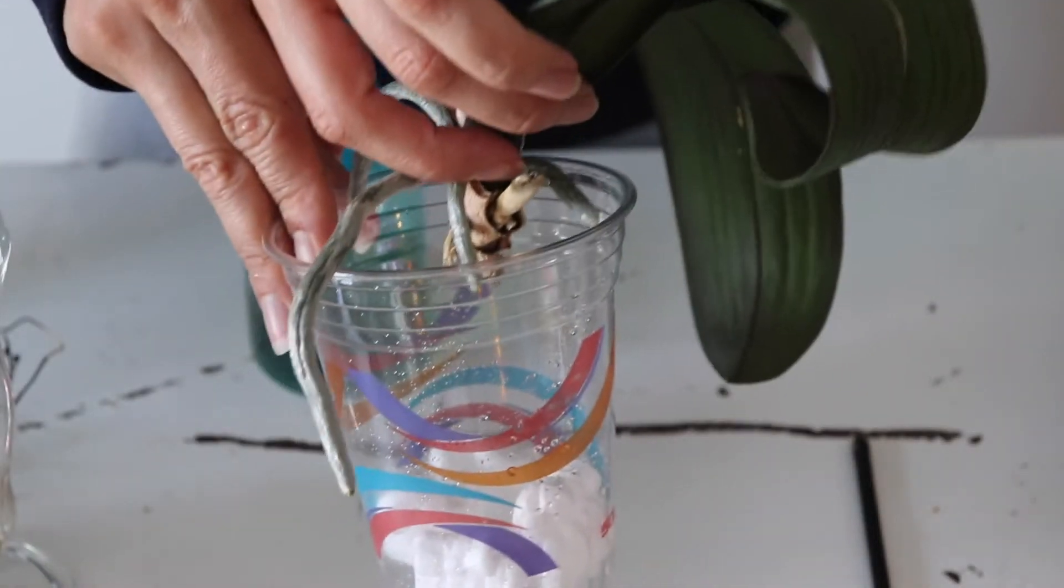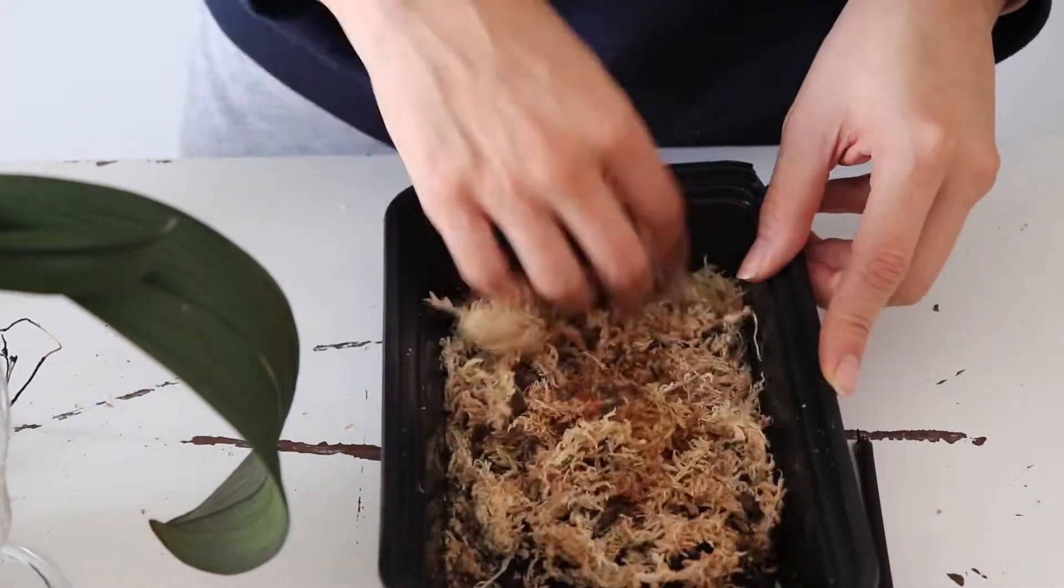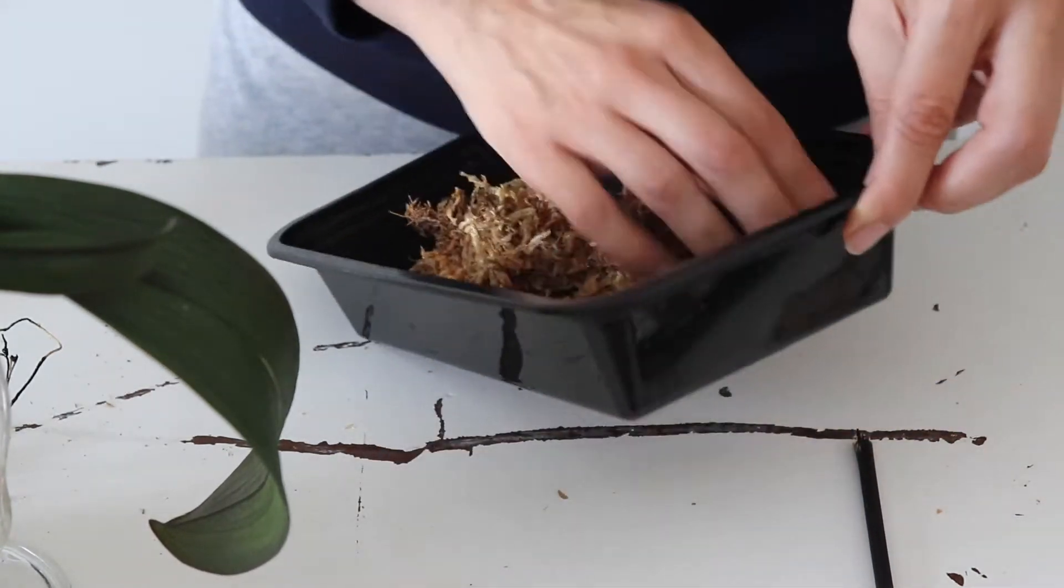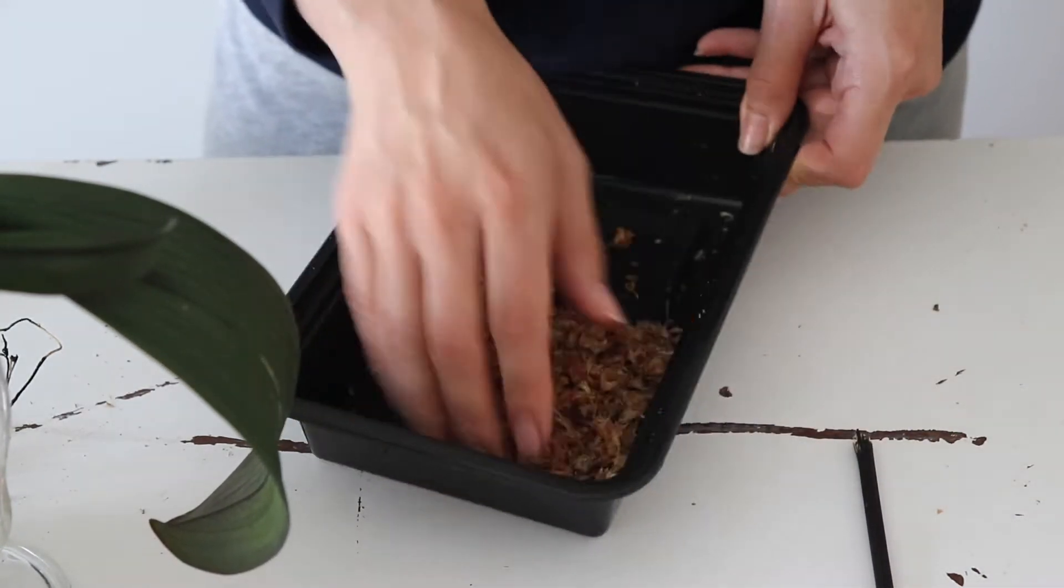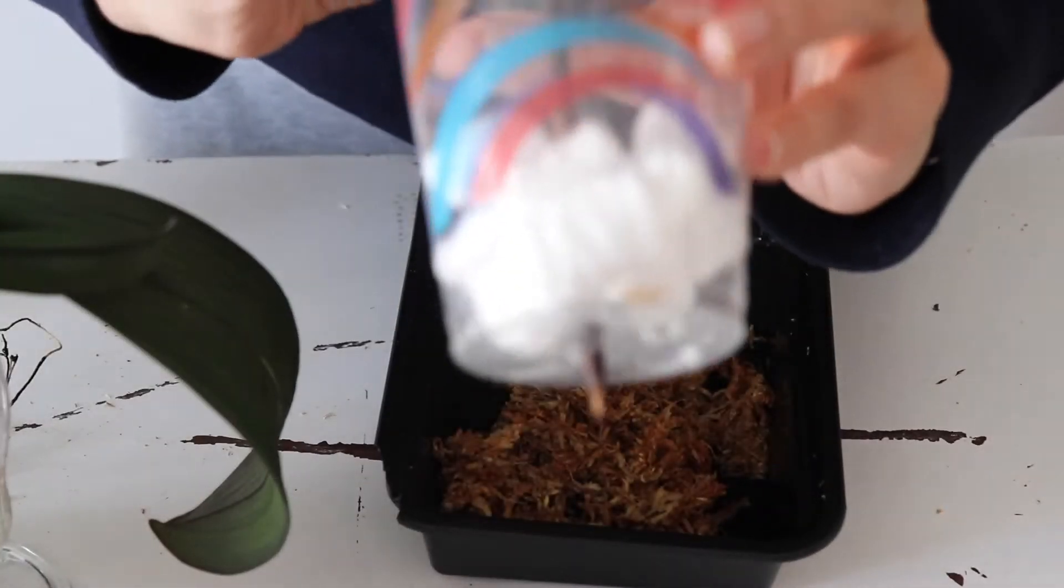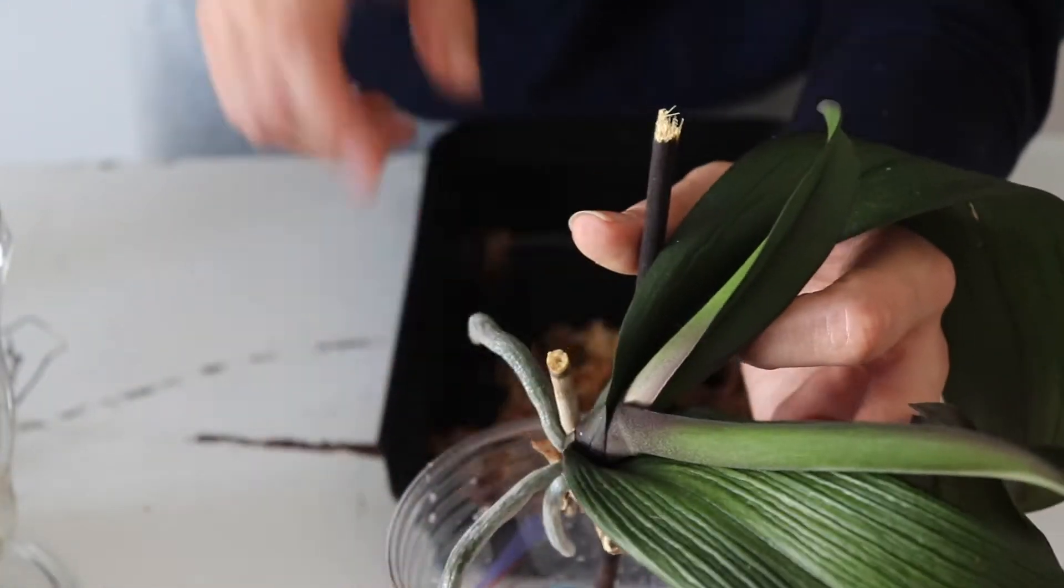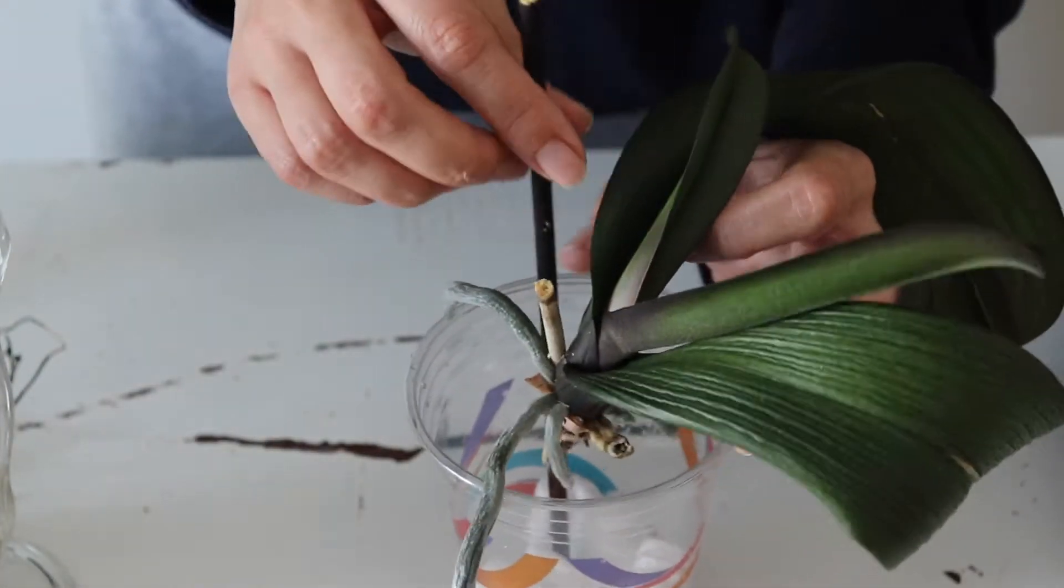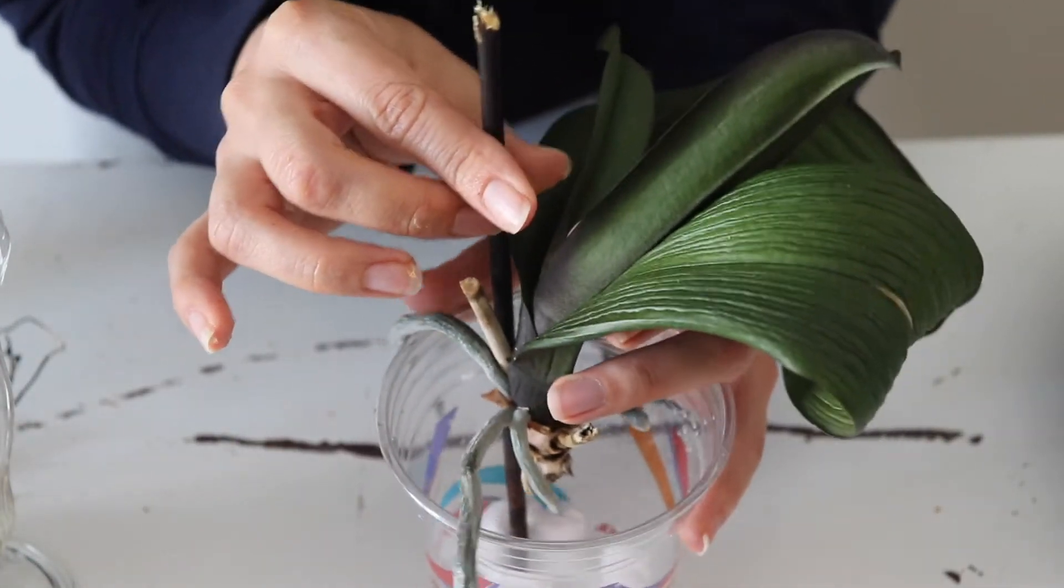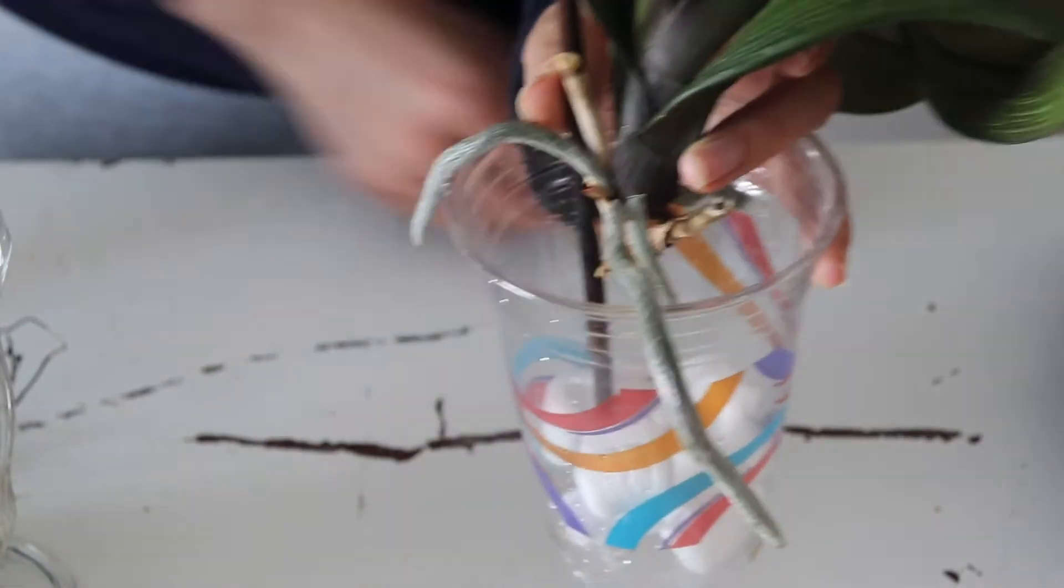I am using New Zealand sphagnum moss laid over packing peanuts. Make sure they are the ones that don't break down. I made that mistake with the bark mix. I repotted this one with the peanuts that don't break down to allow for more airflow. I've seen this method done for other orchids besides phalaenopsis.